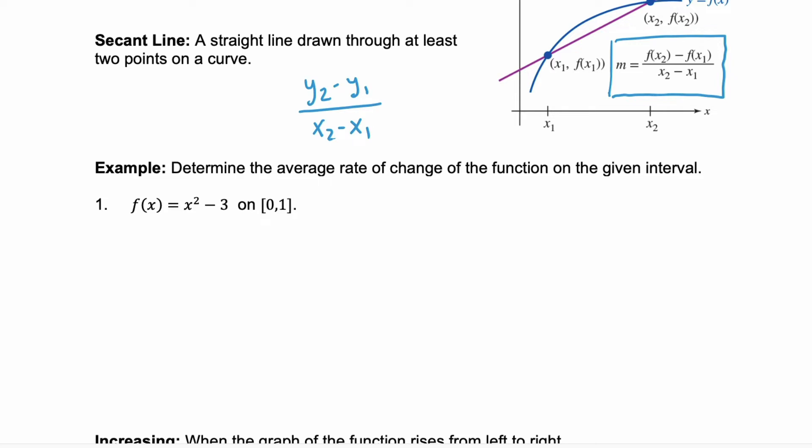In example one, you're asked to determine the average rate of change of the function on the given interval. This interval are your x values. So we're saying when x is 0 through when x is 1. So if x equals 0, you need to find f(0). So you solve that function with x being 0, which is 0 squared minus 3 or negative 3.